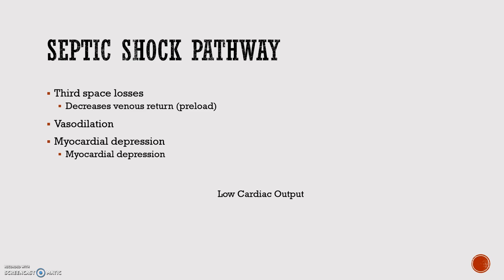The most common distributive shock is septic shock. Distributive shock is an abnormal distribution of blood flow in the smallest blood vessels, resulting in inadequate supply of blood to the body's tissues and organs. Specifically, the inflammatory response causes third spacing, which reduces venous return and decreases preload. Additionally, the inflammatory response causes vasodilation. Cytokines cause myocardial depression and decreased cardiac contractility. These three components all cause low cardiac output. The failure of compensation after persistent insult causes hypotension, which leads to decreased oxygen delivery, the inability to remove metabolic waste, and major organ dysfunction. The majority of these sepsis patients die of refractory hypotension and cardiovascular collapse.